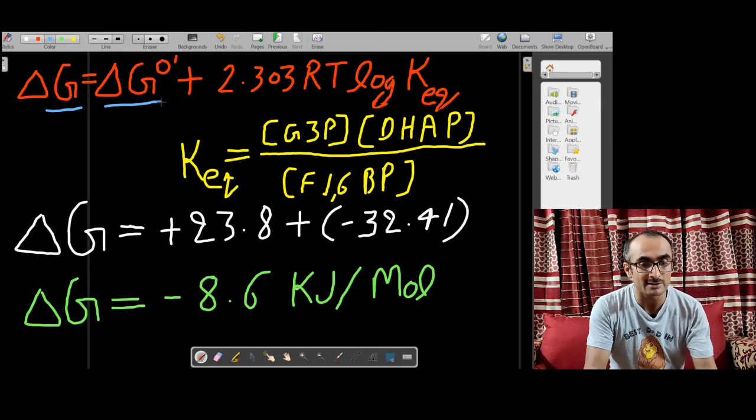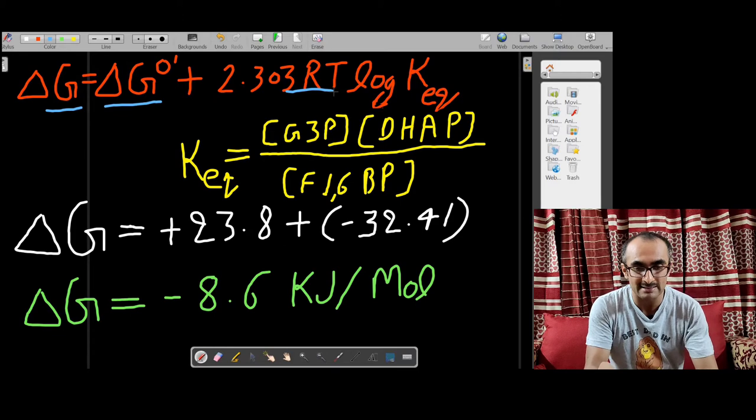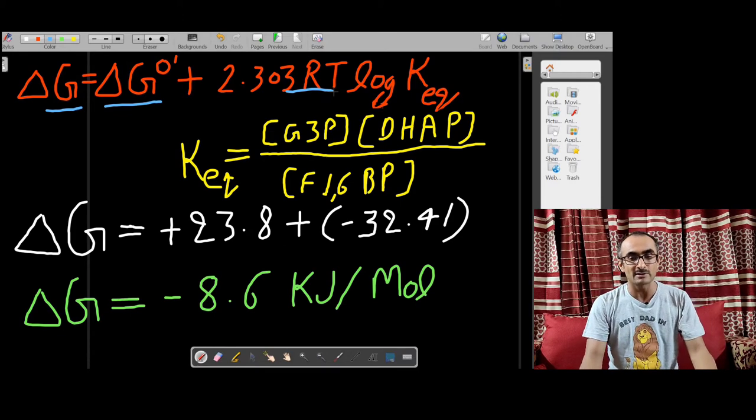So ΔG = ΔG°′ + 2.303RT log Keq, where R is the gas constant, T is temperature, and Keq is the equilibrium constant for the reaction.